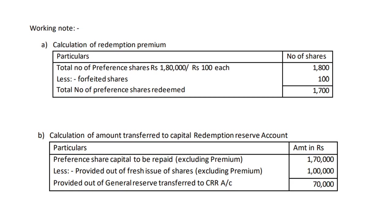Second working note: calculation of amount to transfer to Capital Redemption Reserve account. Preference share capital to be repaid: 1,700 shares × 100 rupees = 1,70,000 rupees. Less provided out of fresh issue: 10,000 shares × 10 rupees = 1,00,000 rupees. Remaining 70,000 rupees to be provided out of general reserve, transferred to CRR account from divisible profit in general reserve.